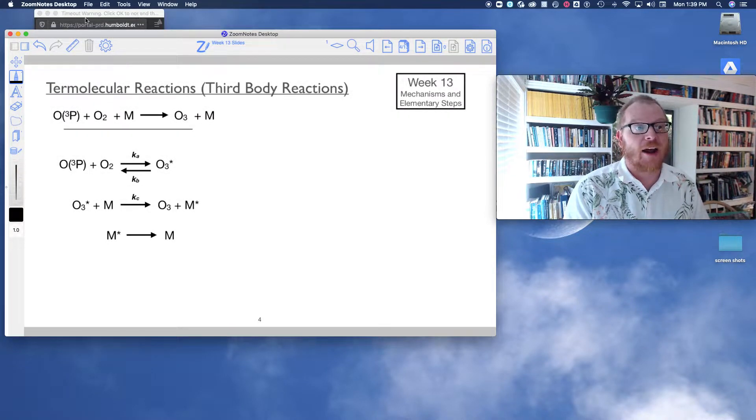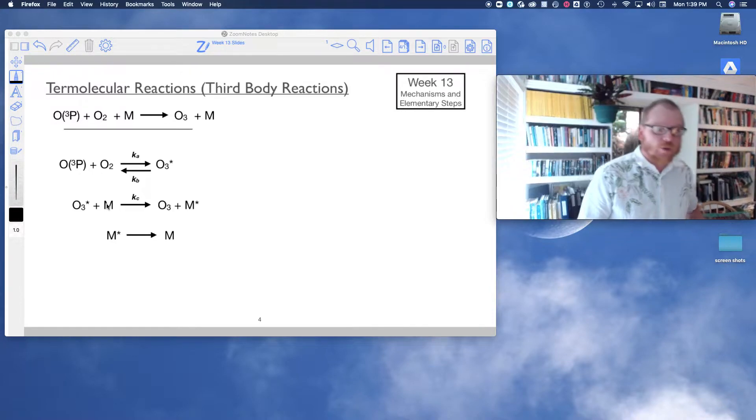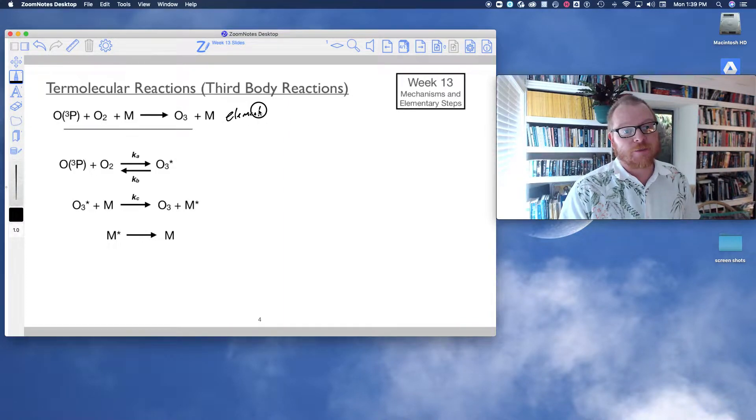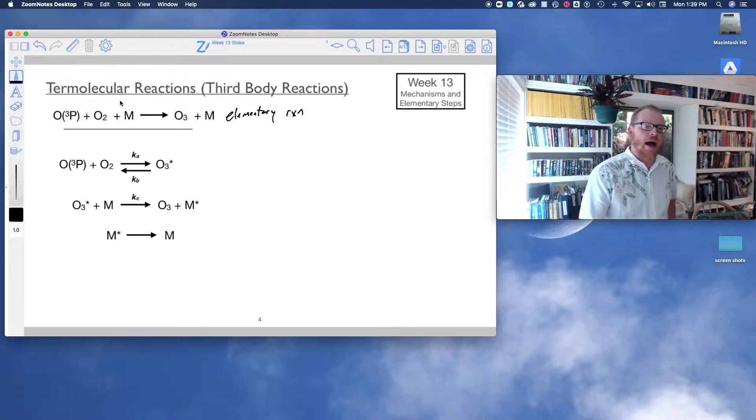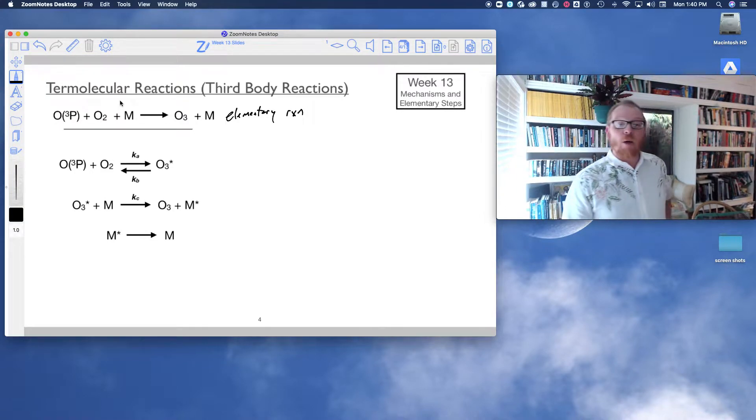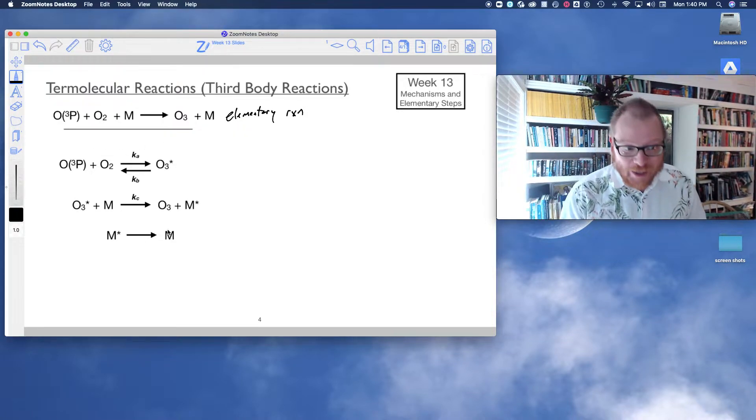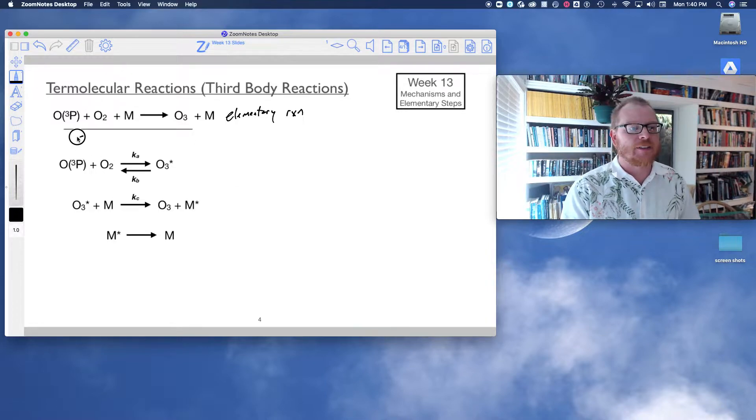So I want to apply that to this reaction with ozone now. What I'm going to point out is this is actually an elementary reaction right here, this O triplet P plus O2 plus M. You can see more reactions involving third bodies. However, it's been proposed that even this elementary reaction can be broken down into some elementary steps.